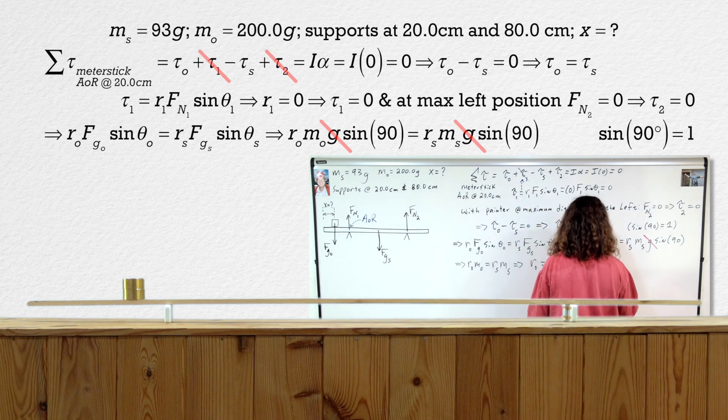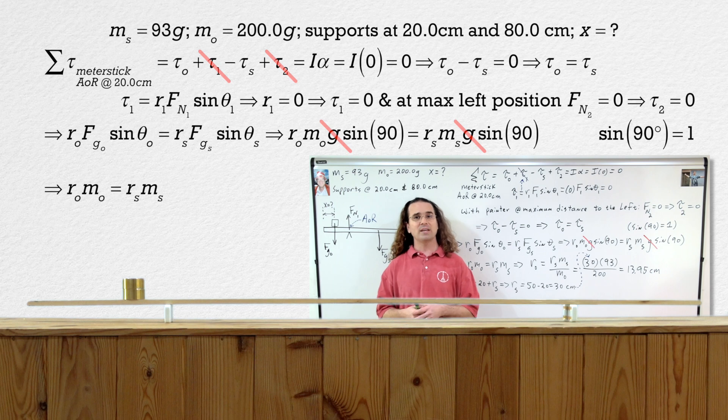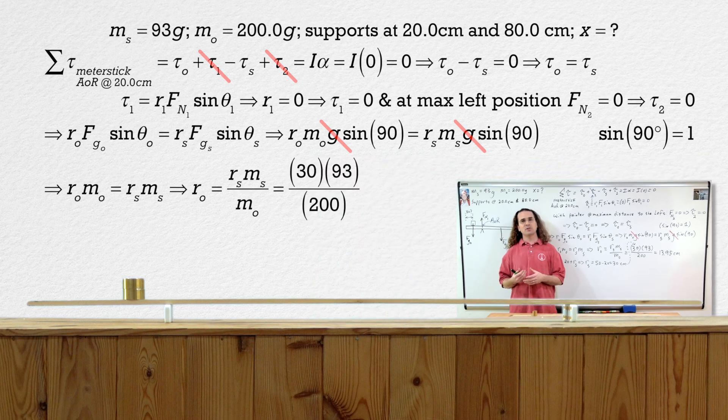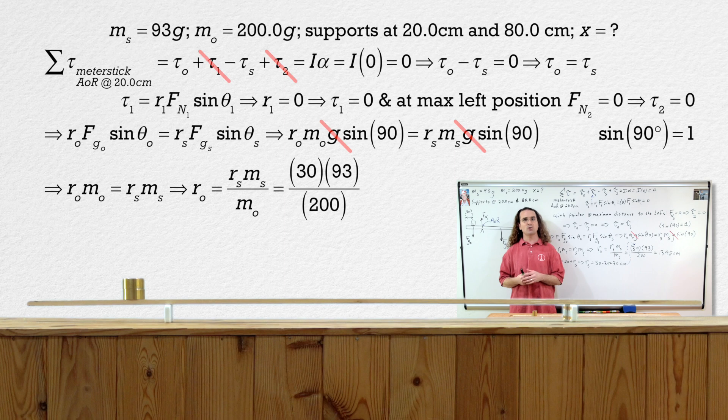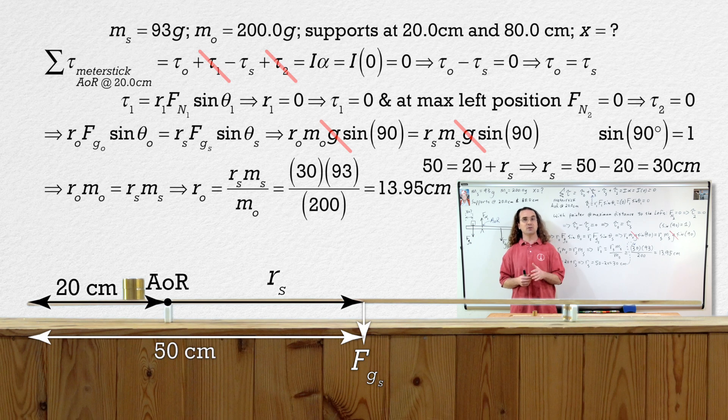Everybody brought mass! Therefore, we can solve for the r for the object. It equals 30 times 93 divided by 200 or 13.95 centimeters. Notice r for the meter stick equals 30 centimeters because 50 centimeters equals 20 centimeters plus r for the meter stick.